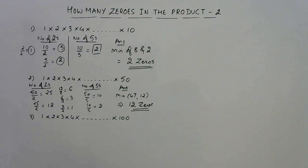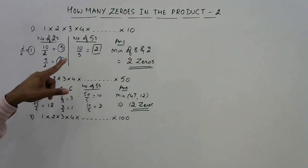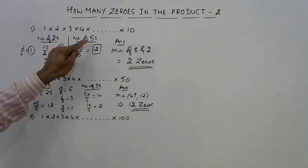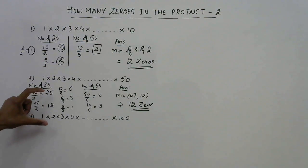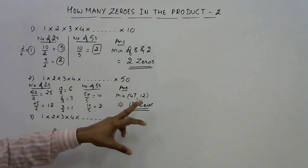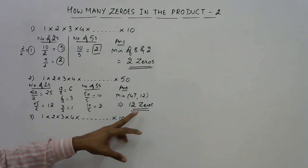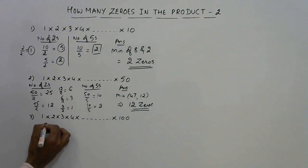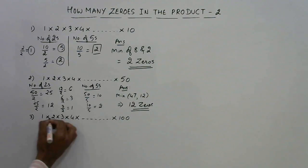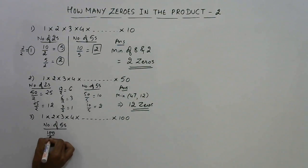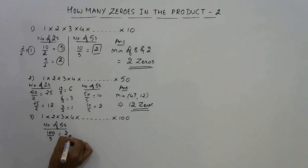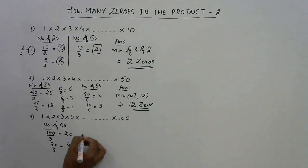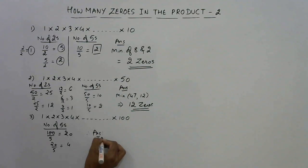Once you know this method you can reduce the complexity further. Just observe that the number of twos will always be greater than the number of fives. So since we need the minimum of the two, we only need to find the number of fives. For the product 1×2×...×100: 100 divided by 5 is 20; 20 divided by 5 is 4; and 4 is less than 5, so we stop. The total number of fives is 20 + 4 = 24. Therefore the answer is 24 zeros.